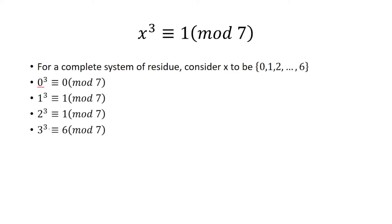3 cubed is 27. 27 divided by 7 leaves me a remainder of 6.